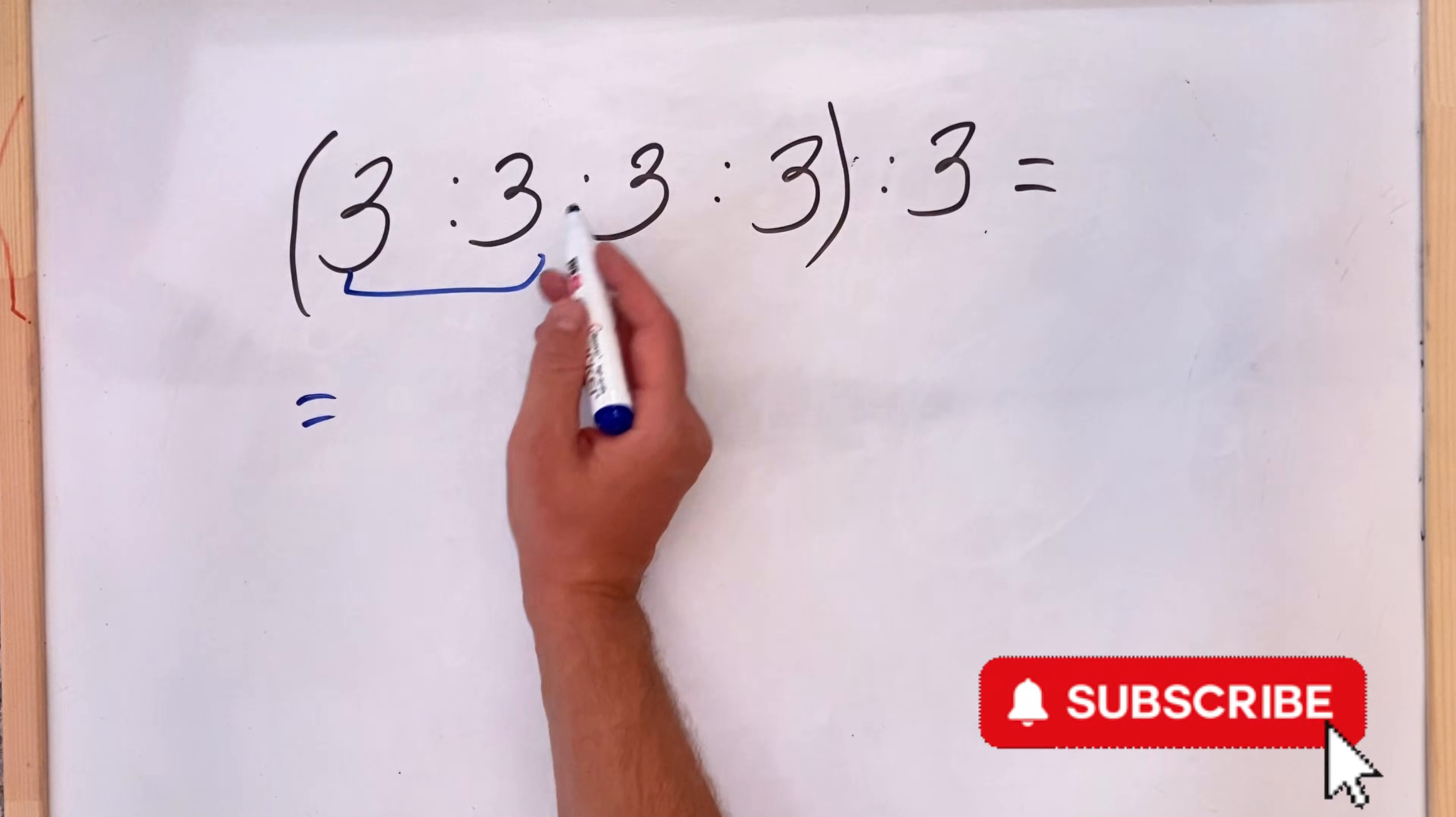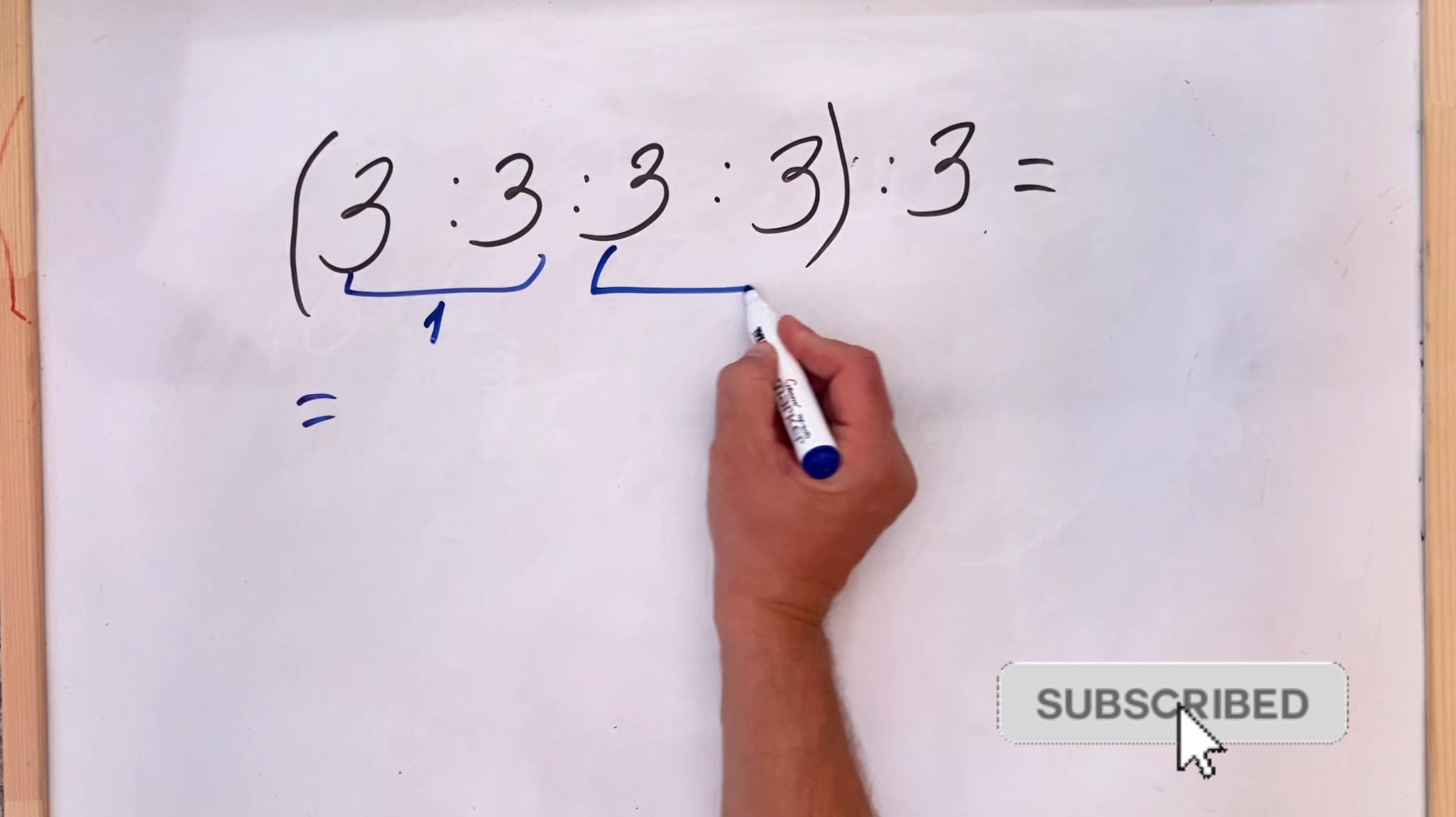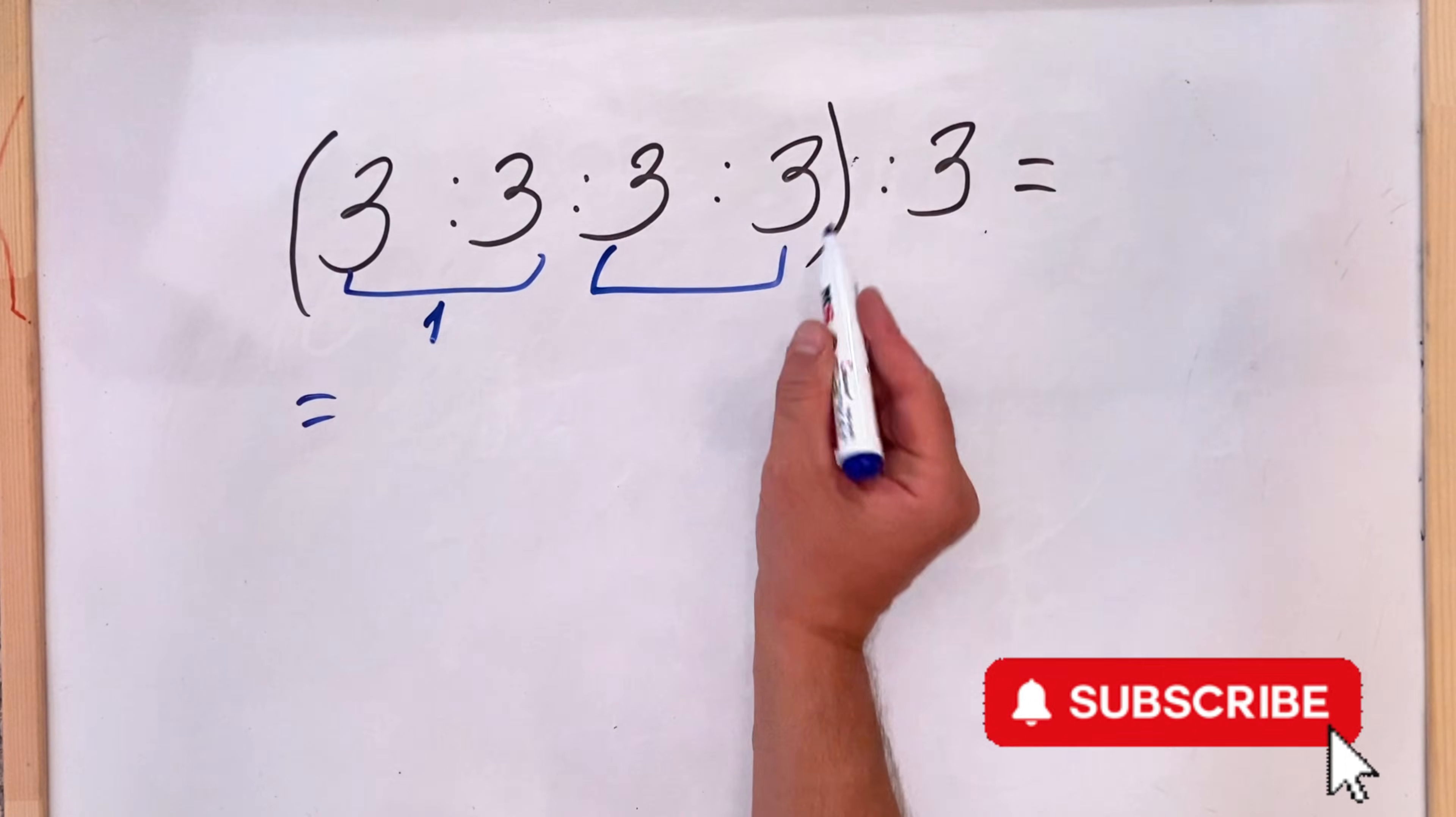So they cancel these ones, 3 divided by 3, which is 1. Then they cancel these ones, 3 divided by 3, which is 1 as well.